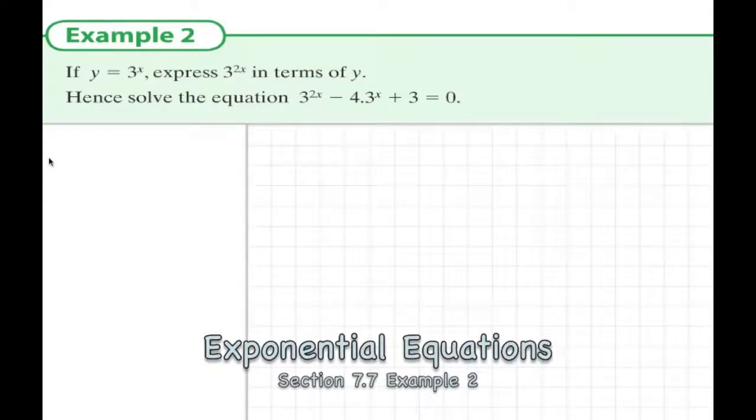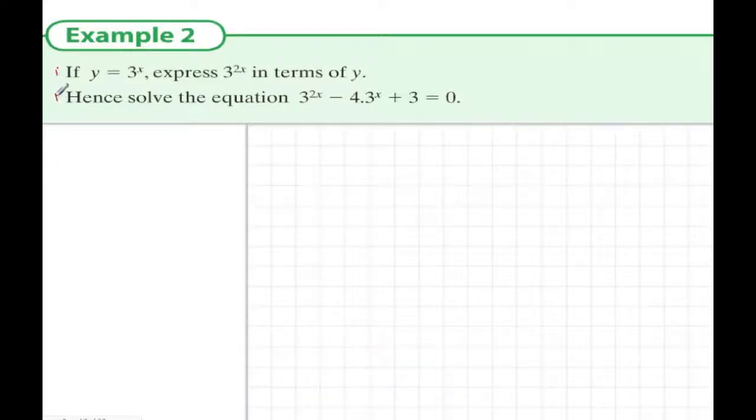And here we have the second example. In the first part of this, we've been asked to rewrite if y equals 3 to the power of x. Well, 3 to the power of 2x, what's that in terms of y? Well, 3 to the power of 2x, that's 3 to the power of x squared, so that must be y squared. That's the simple answer to part 1.